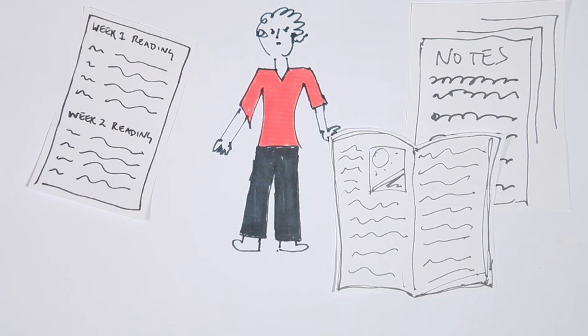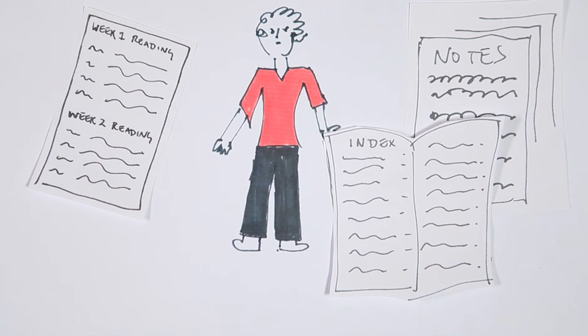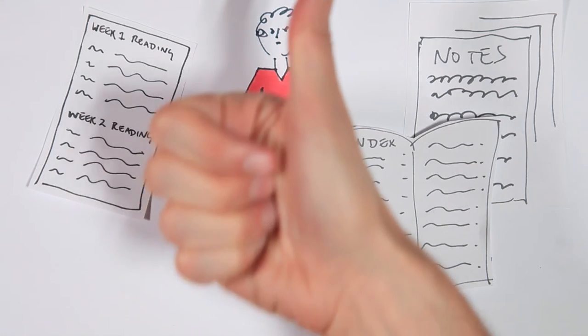He looks through the index and table of contents to see if they cover the topic of his assignment. These may be available on Amazon or Google Books. Textbooks don't assume Dave is an expert on the topic so they're a good resource at this early stage.